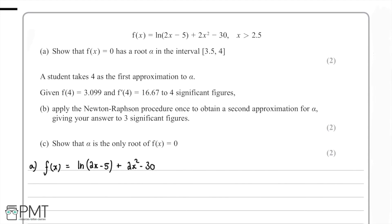In this question we're given a function f(x) which is equal to ln(2x - 5) + 2x² - 30, with the condition that x must be greater than 2.5.